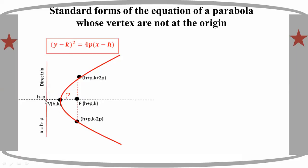The focus is at h plus p, k. The focus is the derivative. h plus p corresponds to x minus p. The directrix is x equals h minus p. Start the distribution: the right trick gives h equals h minus p.